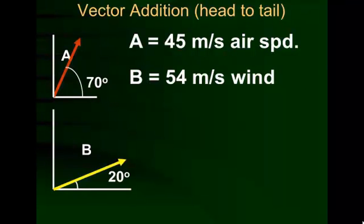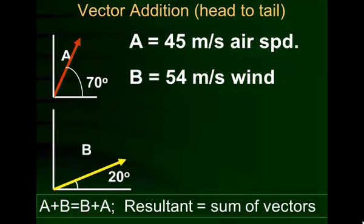Those examples were very easy because the wind speed was on the same axis as the air speed. But what if they're not on the same axis? That's when we have to do special vector addition. It doesn't matter which one we add first — you can add the first one to the second or the second to the first, as long as you put them head to tail. Then what we get when we add them up is called the resultant of the vectors.